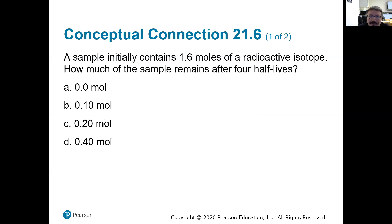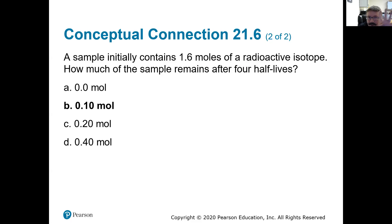A sample initially contains 1.6 moles of a radioactive isotope — how much remains after four half-lives? After one half-life we have 0.8 moles, after another we have 0.4, then 0.2, then 0.1. So after four half-lives we have 0.1 moles remaining. This is concentration-based and since we don't have the rate constant, this is just a basic mathematics problem.